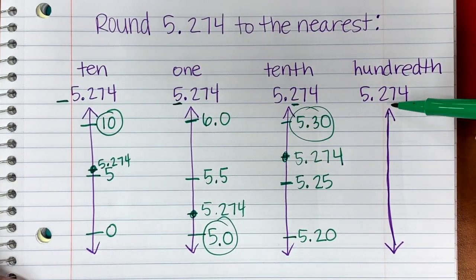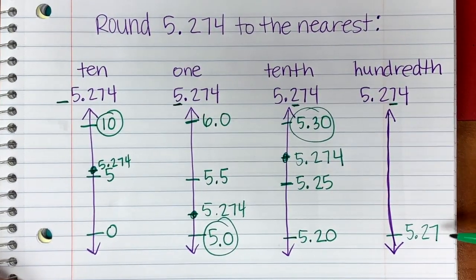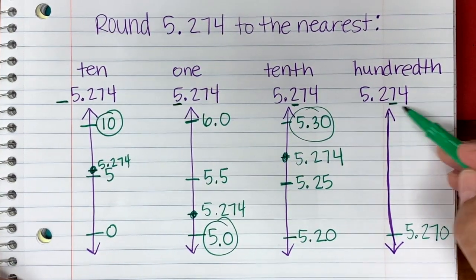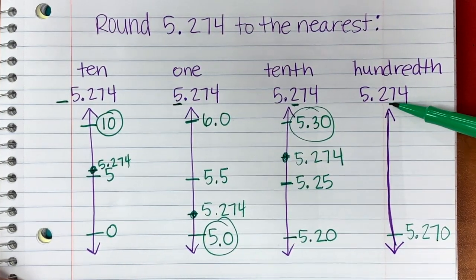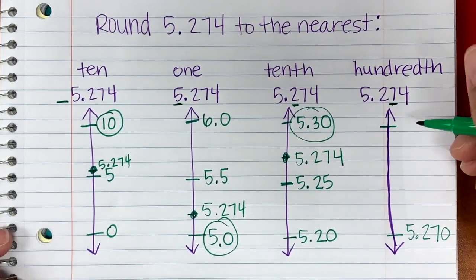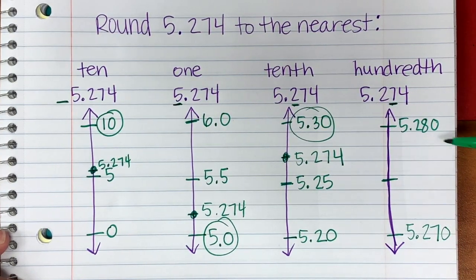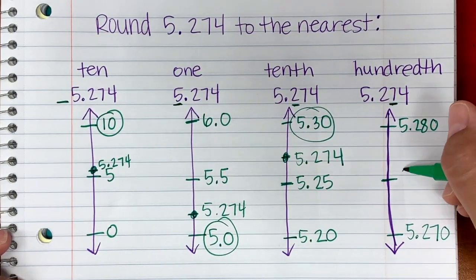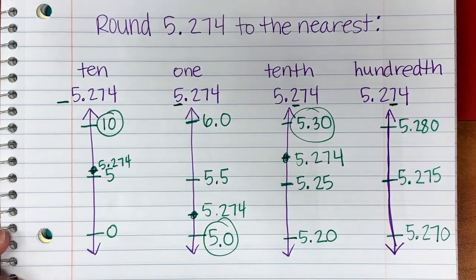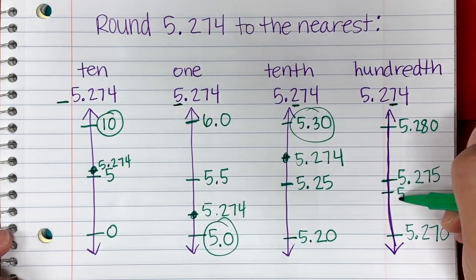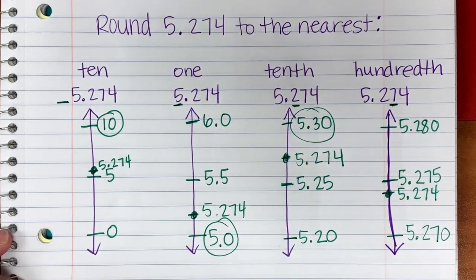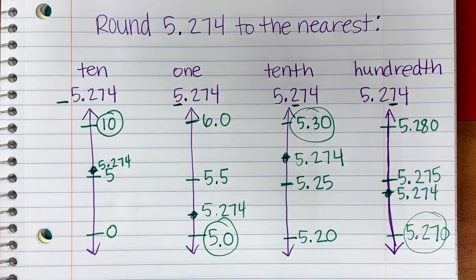For the hundredths, we underline the hundredths place. Everything leading up to and including that digit is the floor: 5.27 (you can put a zero after). Increase that place by one and the ceiling is 5.28 — add a zero to help find the midpoint. Looking at the last two digits, 70 and 80, what falls in between? 75. So the midpoint is 5.275. We plot 5.274, which falls just below the midpoint, so we round down to 5.27.